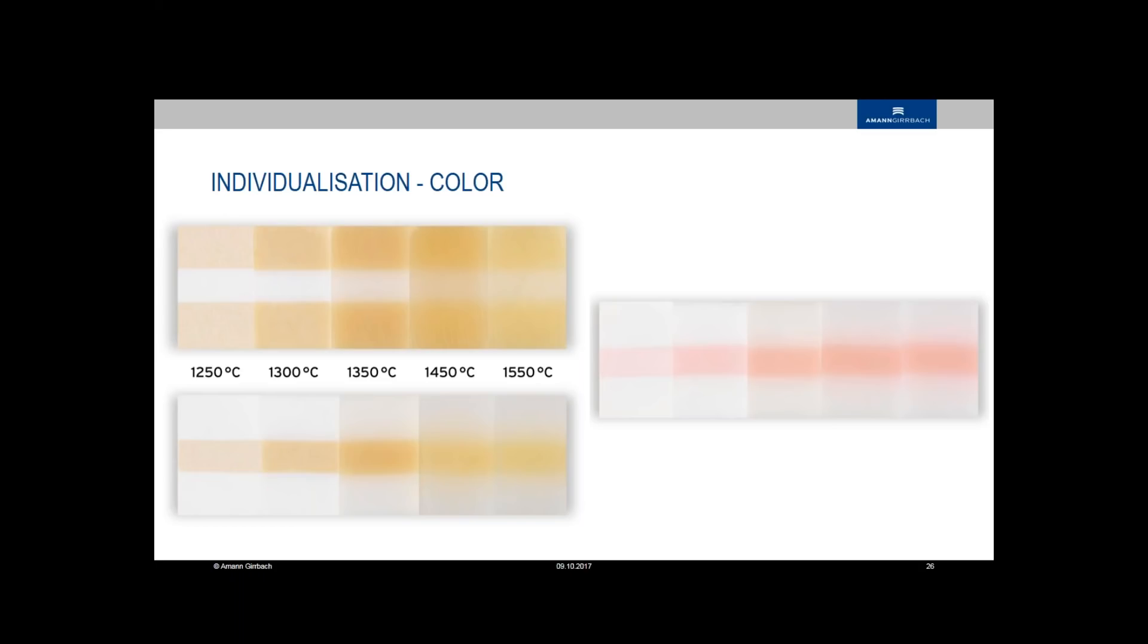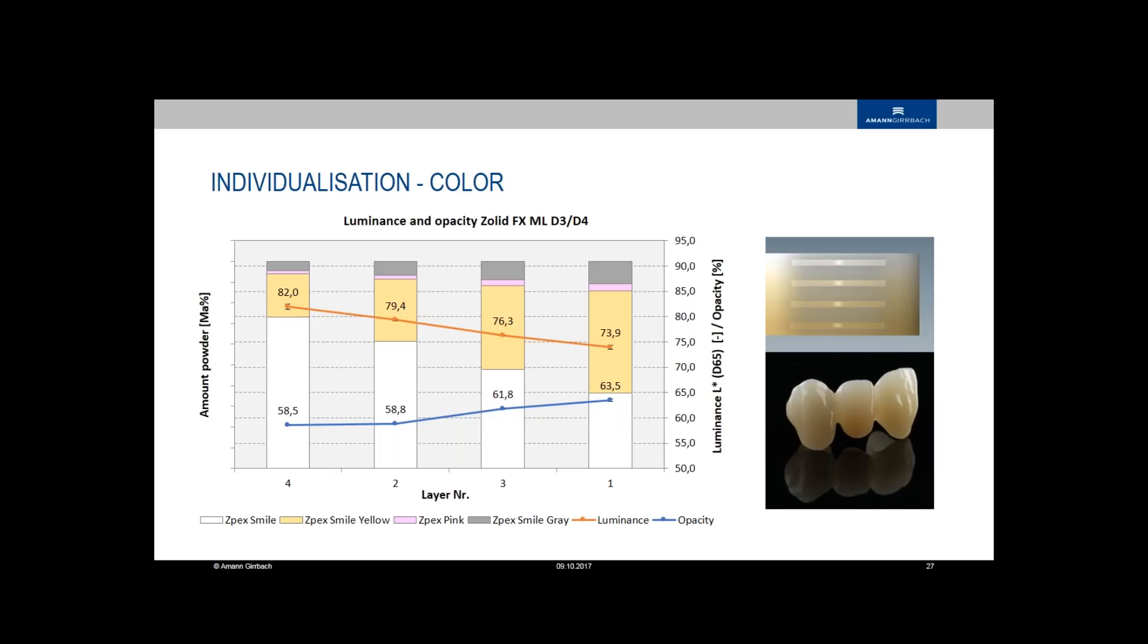As you can see here, when we have, for example, FX multi-layer coloring, the more color you have in a blank from up to downwards here, then you also have losing translucency or opacity goes up. That's a natural effect. It's good that we have more opacity down here and more translucency up here. Somebody is just making marketing on that, that they have a gradient in the translucency made for you. This is just an automatic or natural effect every shaded or translucent shaded blank has anyway.